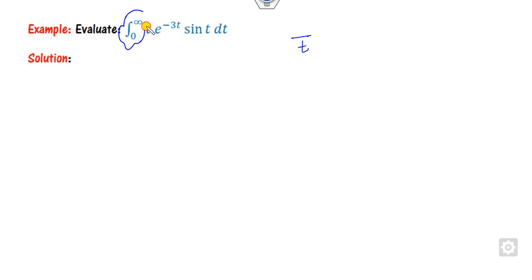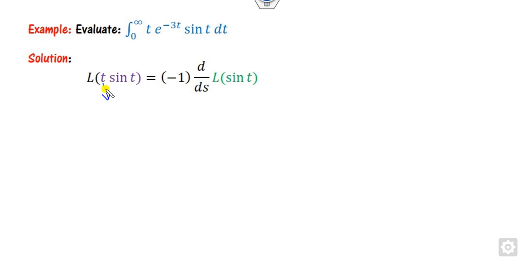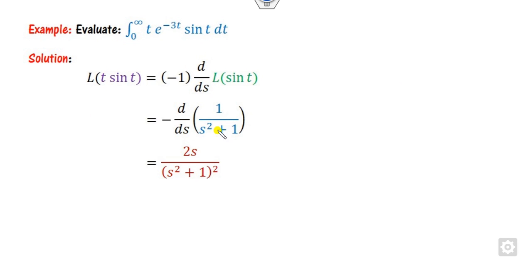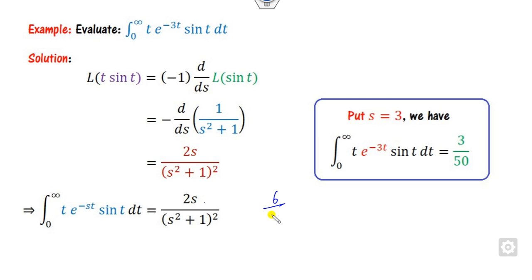For the last example, there is no division by t, but the limit is 0 to infinity so we can use Laplace. Since there is an exponential part, find the Laplace of t·sin(t) and then compare setting s = e³. Since there is a multiplication by t rule, use the derivative: Laplace of sin(t) is 1/(s²+1), and its derivative gives the Laplace of t·sin(t). Writing this in terms of the Laplace transform and substituting s = 3: the answer is 6/(9+1) = 6/10 = 3/5... giving 6/100 = 3/50. That is the right answer.